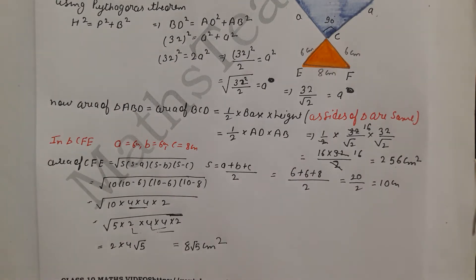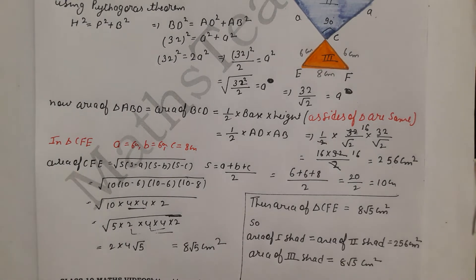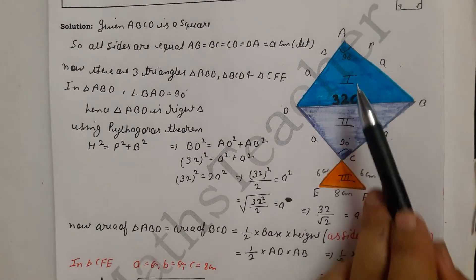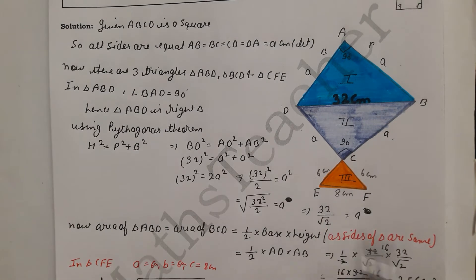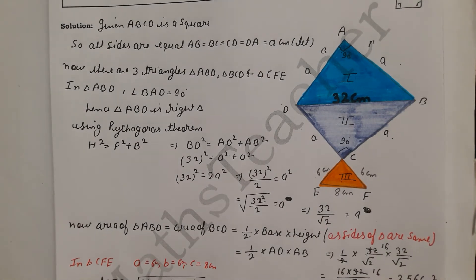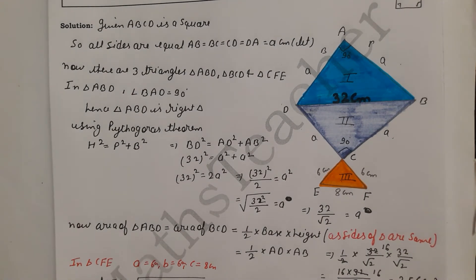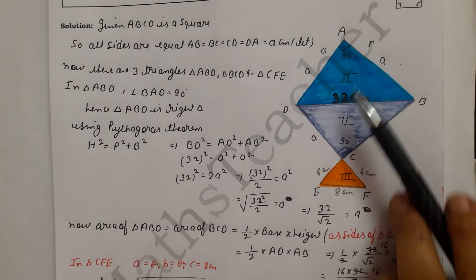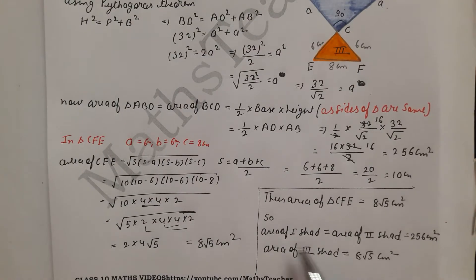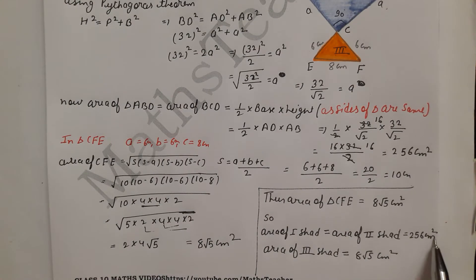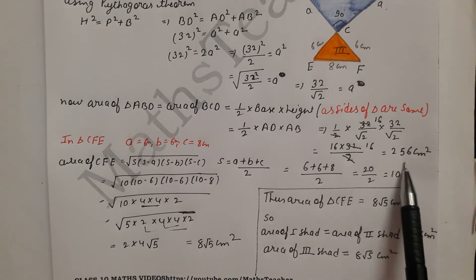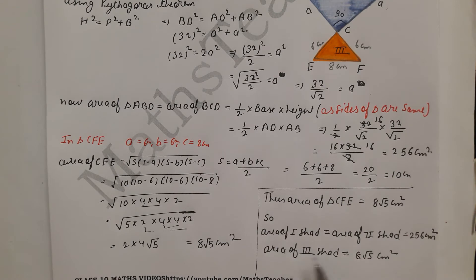Now for the final answer. There are 3 shades numbered 1st, 2nd, and 3rd. Area of 1st shade = Area of 2nd shade = 256 cm². Area of 3rd shade = 8√5 cm².